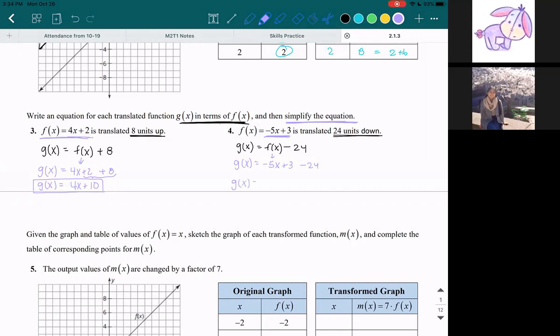So g(x) = -5x, and then the +3 and the -24 combine to make -21.